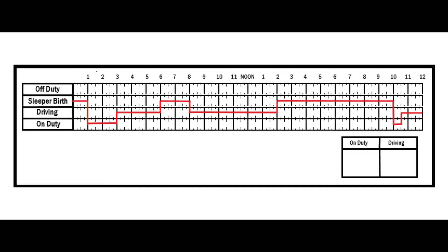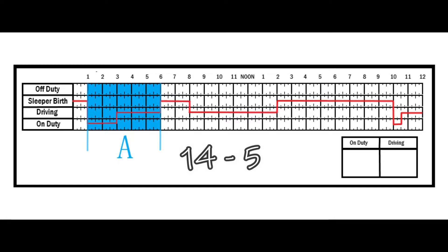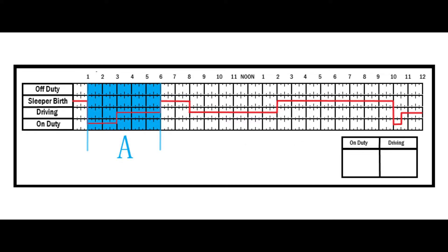You simply take the hours you used in Section A. For instance, you used five hours of on-duty time, so you take 14 hours, subtract the five hours of on-duty time, and that tells you that you have nine hours left when you come off your break. On drive time, you used three hours, so you take your 11-hour total of drive time, subtract three hours, and that gives you eight hours of drive time available when you come off your eight-hour break.